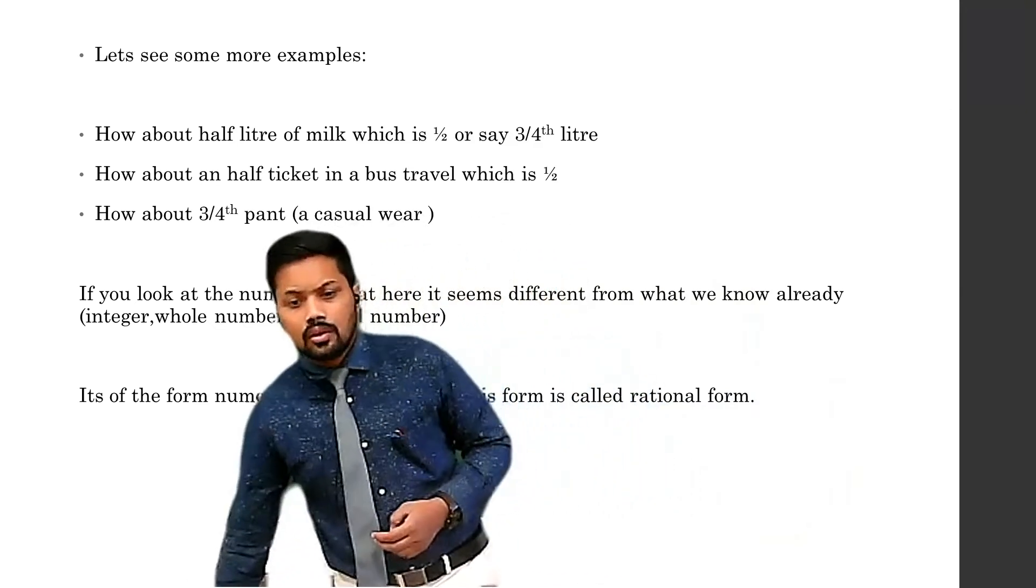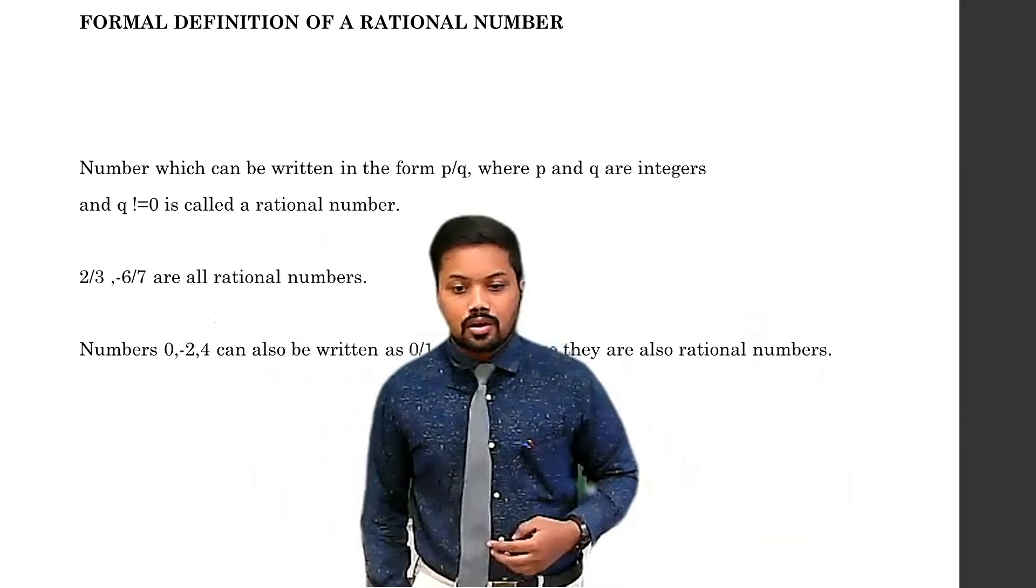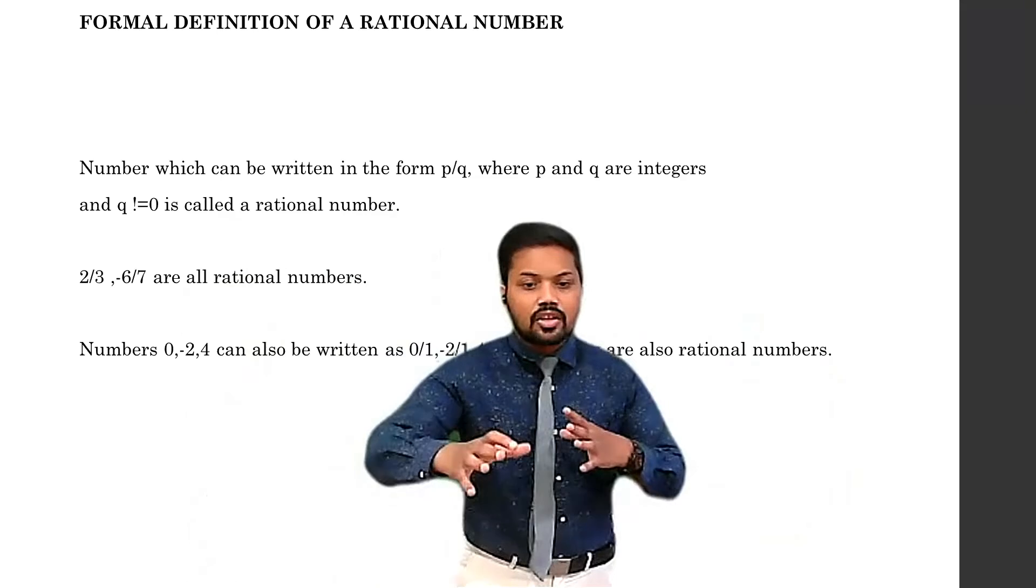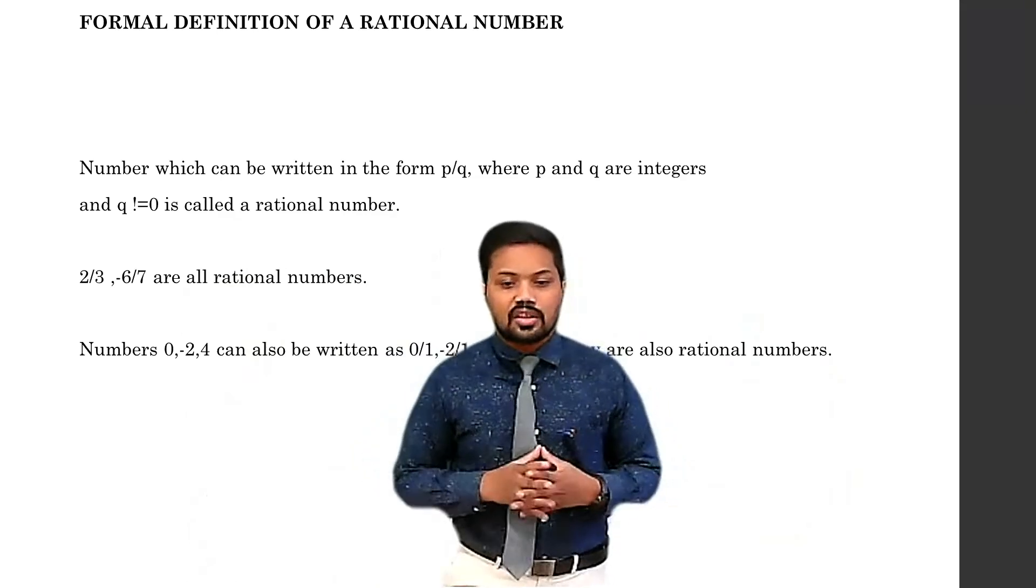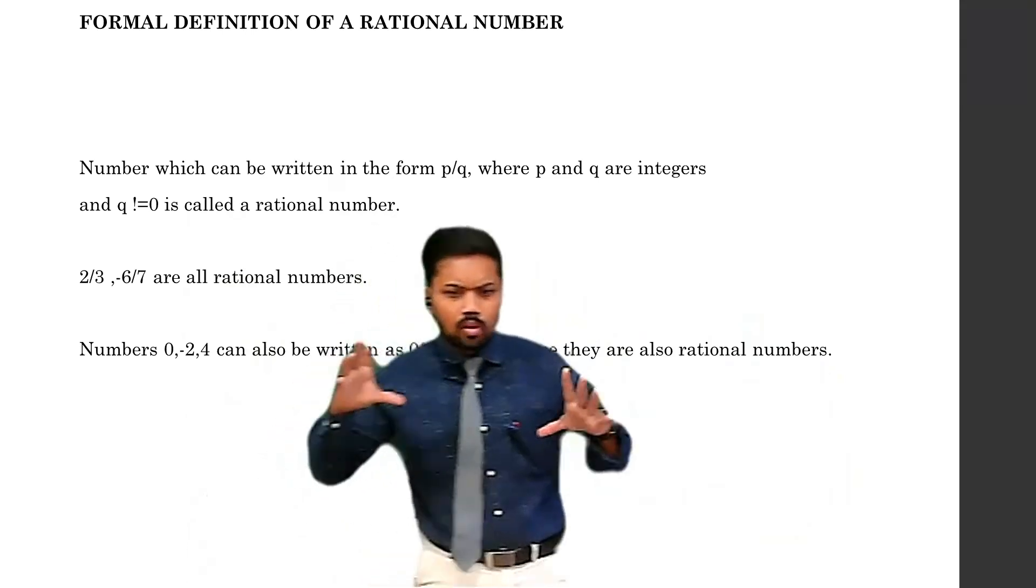A number which can be written in the form p/q, where p and q are integers and q is not equal to 0, is called a rational number. You may have some doubts in your mind.